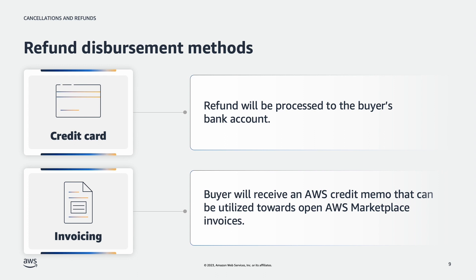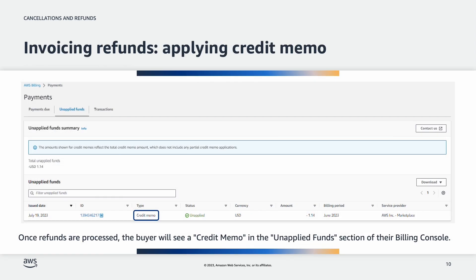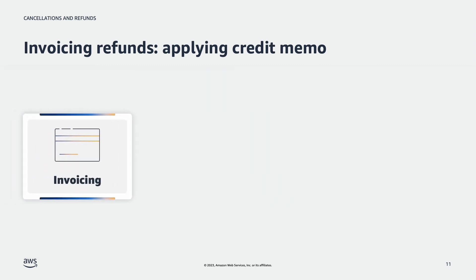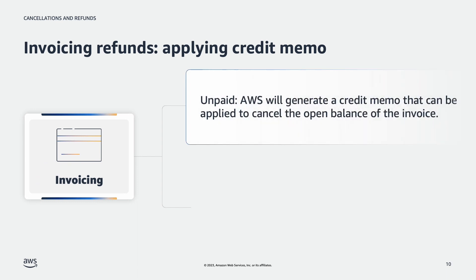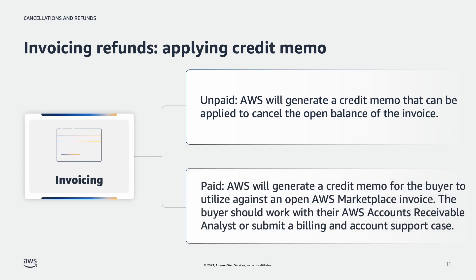I'll be diving deeper into invoicing refunds. For invoicing refunds, the buyer will see this show up as a credit memo in the unapplied funds section of their billing console. A refund can be processed regardless of whether an invoice has been paid. If the original invoice has not yet been paid, AWS will generate a credit memo that can be applied to net out the open balance of the invoice. If the original invoice has already been paid, AWS will generate a credit memo for the buyer to utilize against an open AWS Marketplace invoice. The buyer can work with their AWS accounts receivable analyst or submit a billing and account support case, referencing the credit memo ID and the respective invoice ID it should be applied to.